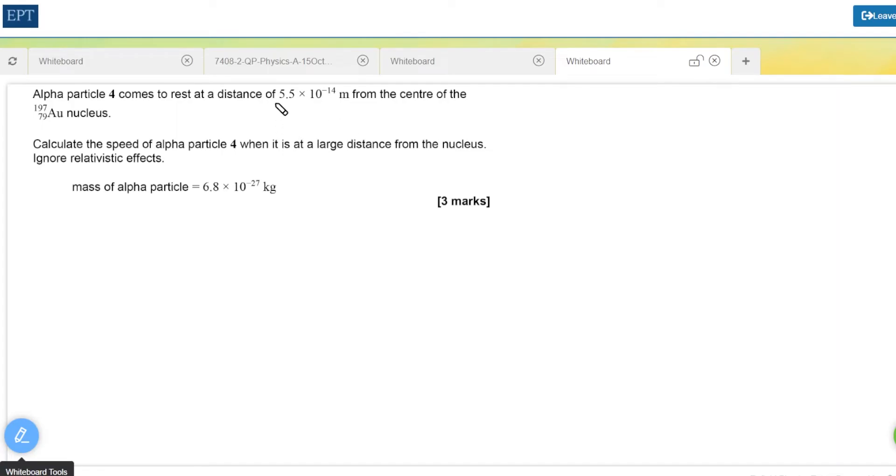In 5.4 we're given the distance of closest approach for an alpha particle as 5.5 times 10 to the minus 14 meters. At this distance the alpha particle is not moving and will therefore have a kinetic energy of zero. When the alpha particle was furthest away it was traveling quite fast so it had considerable kinetic energy.